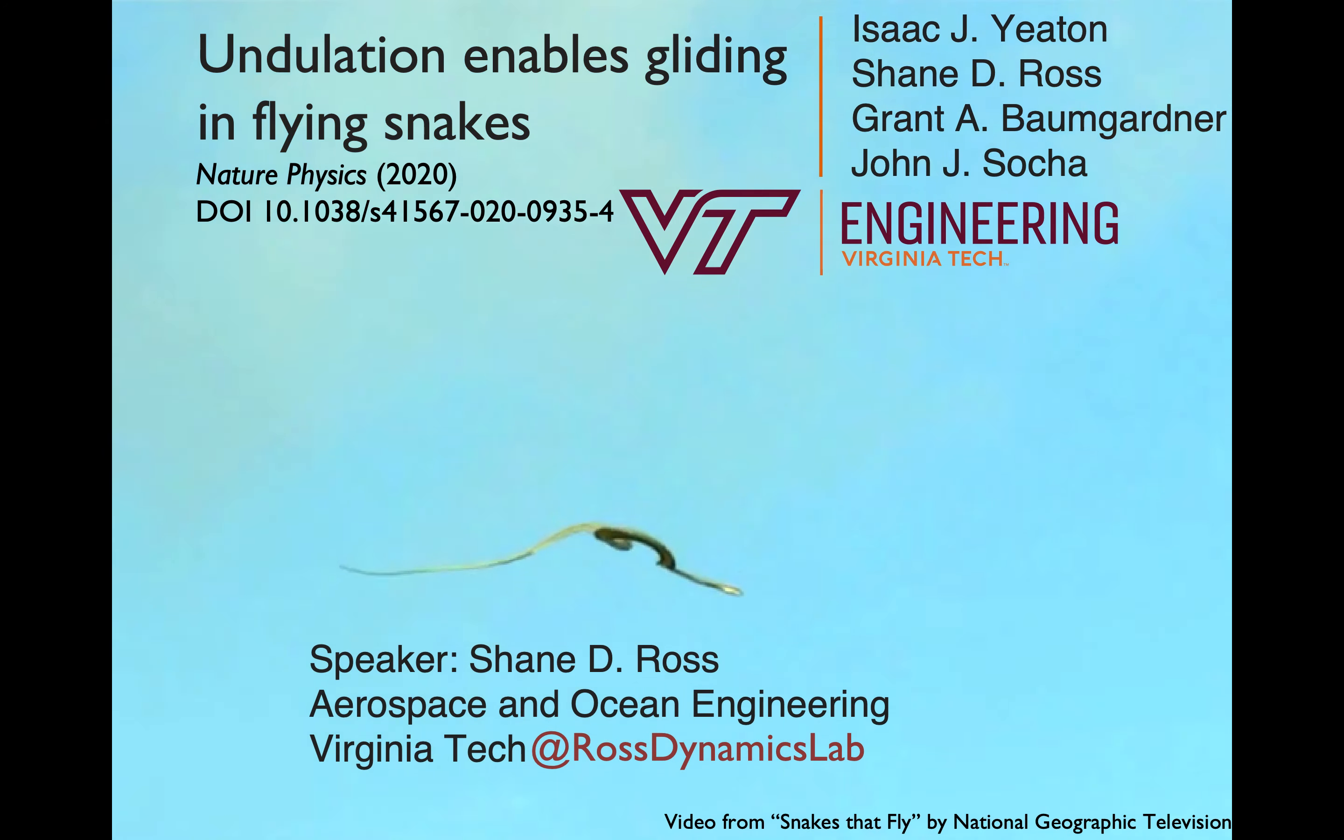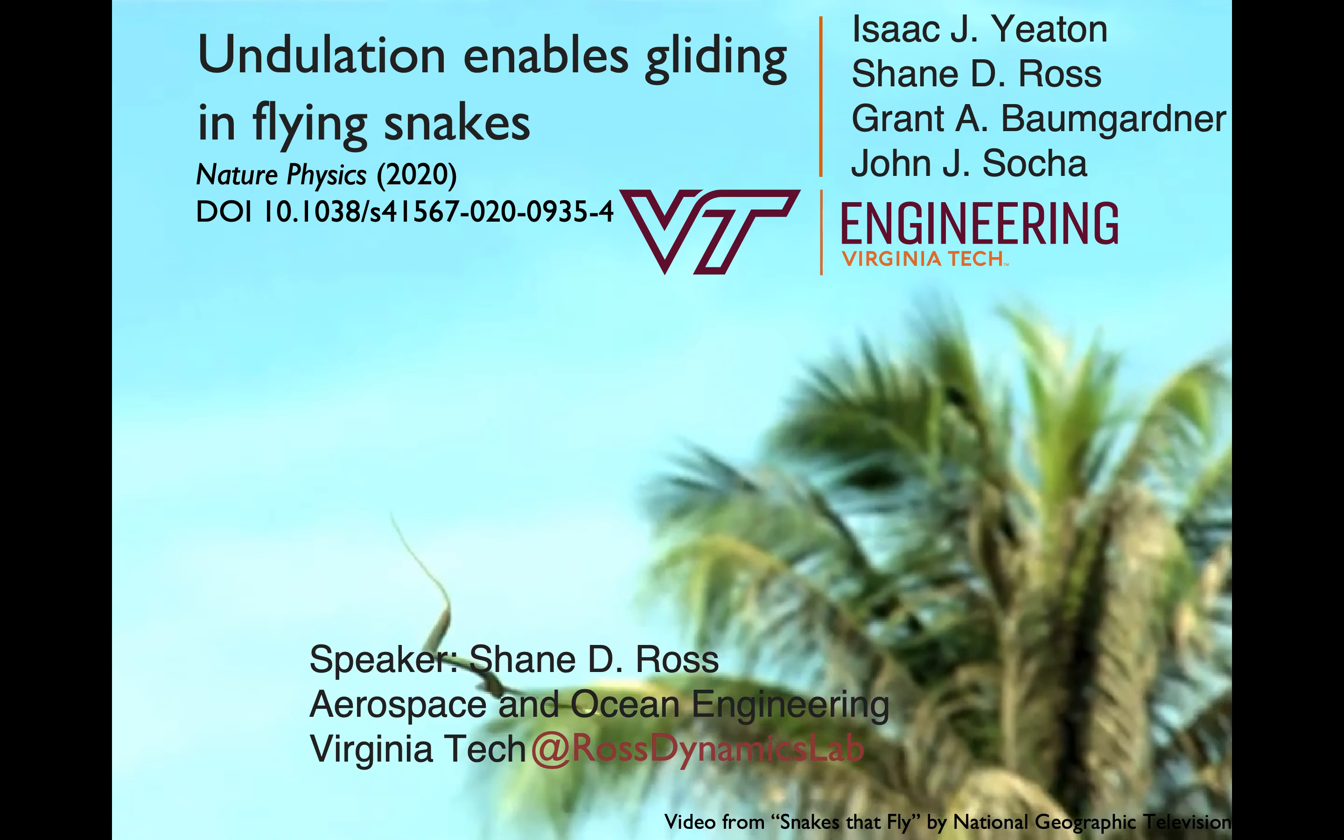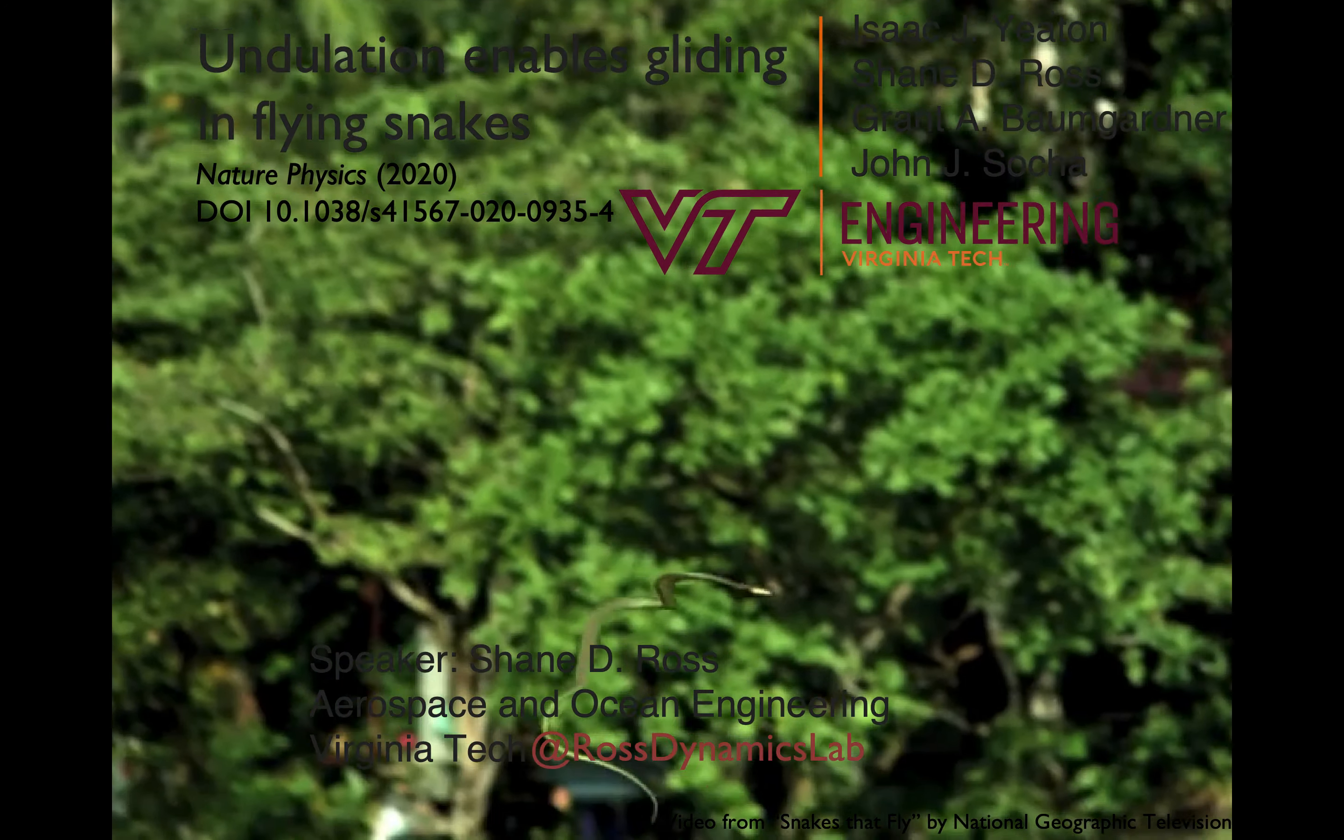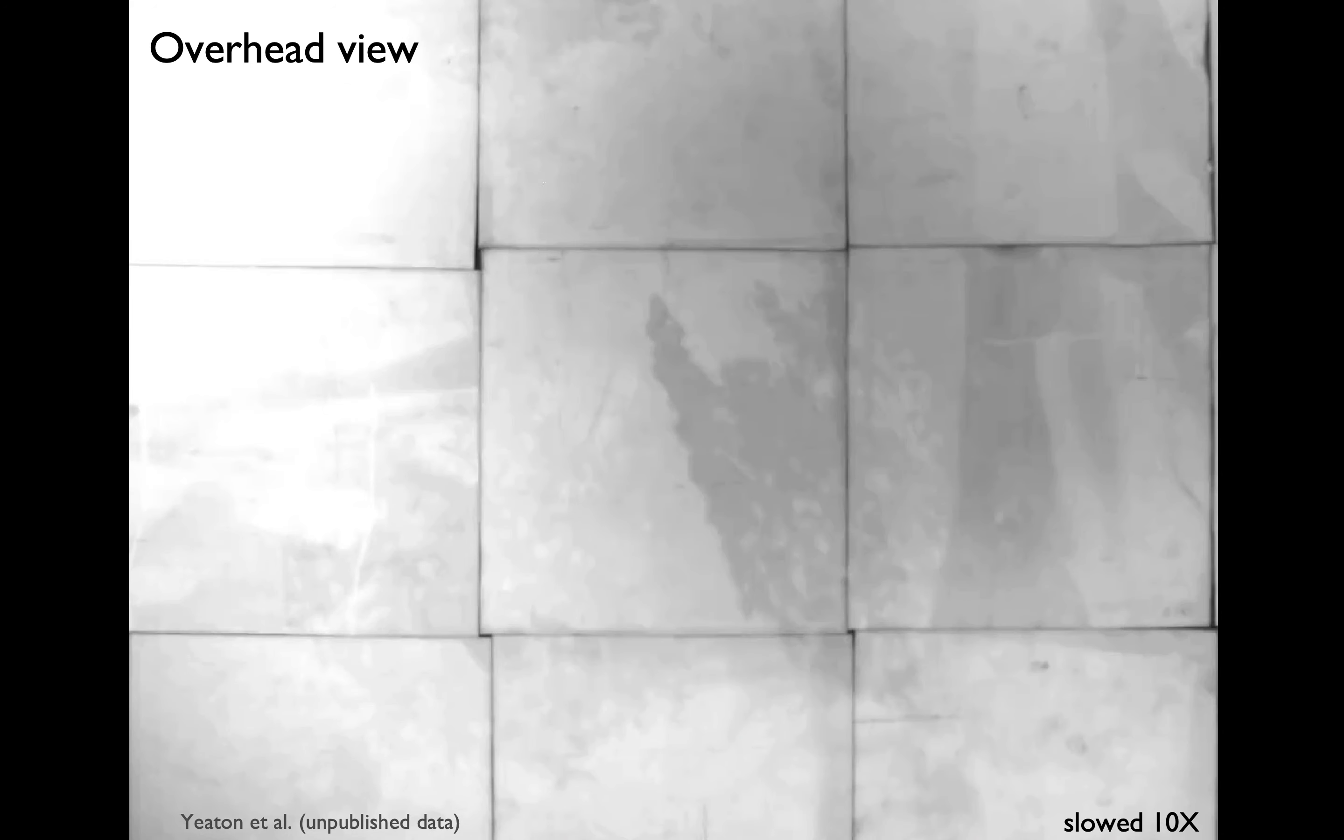It's a visually striking form of locomotion, as seen in this high-speed video, with quite a bit of three-dimensional motion of the snake's body. This overhead view shows that as the animal glides forward, it uses large amplitude side-to-side motion, continuously redistributing its body through the air.